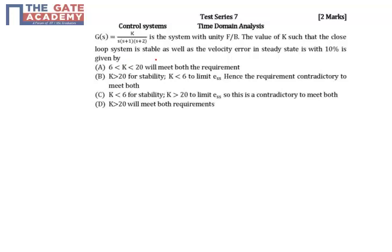There's a technique to find closed loop stability if I know the open loop transfer function, which is the Routh-Hurwitz criteria. To find stability using Routh criteria, first write the characteristic equation, which is 1 plus G(s) equal to 0.